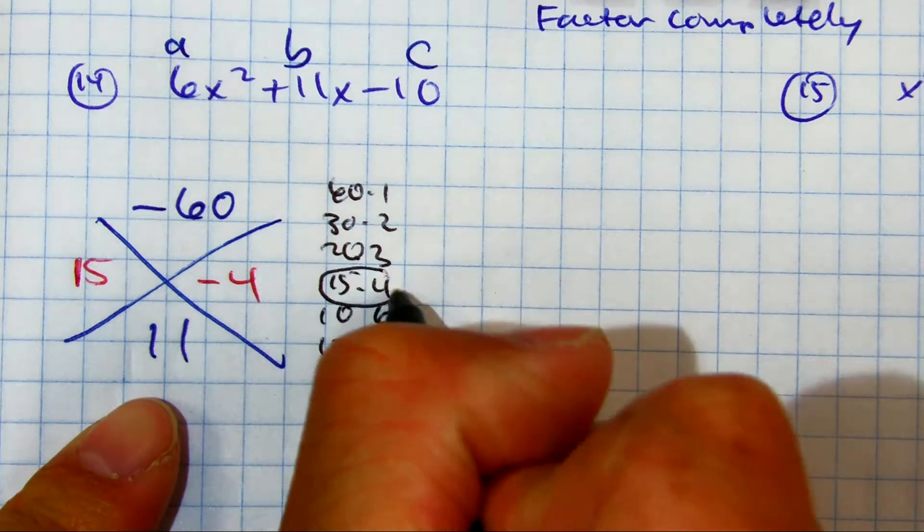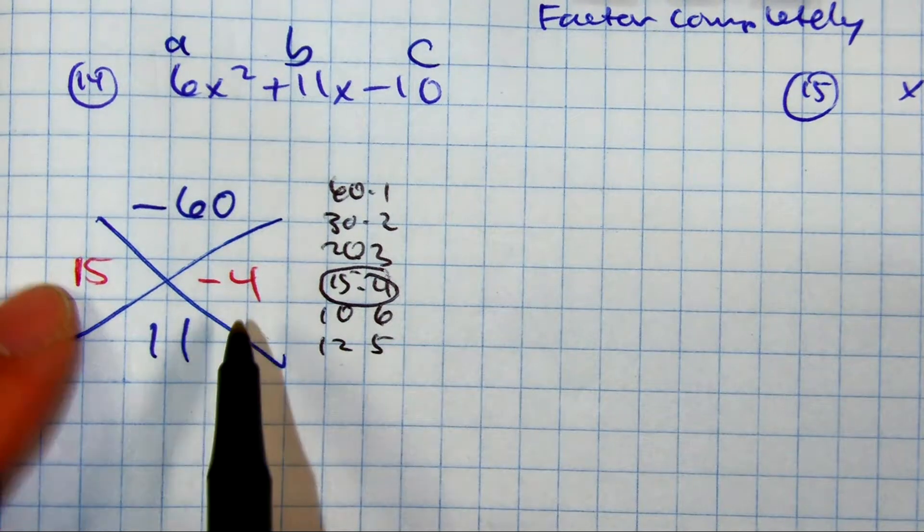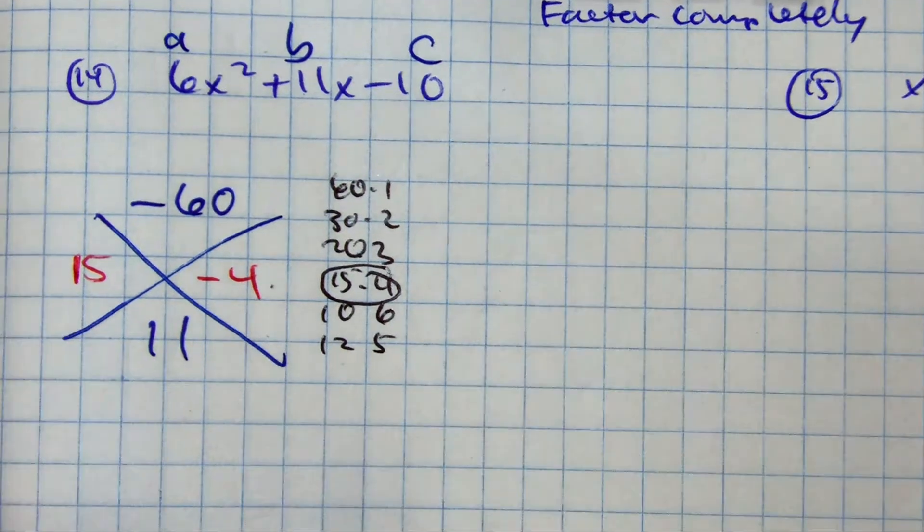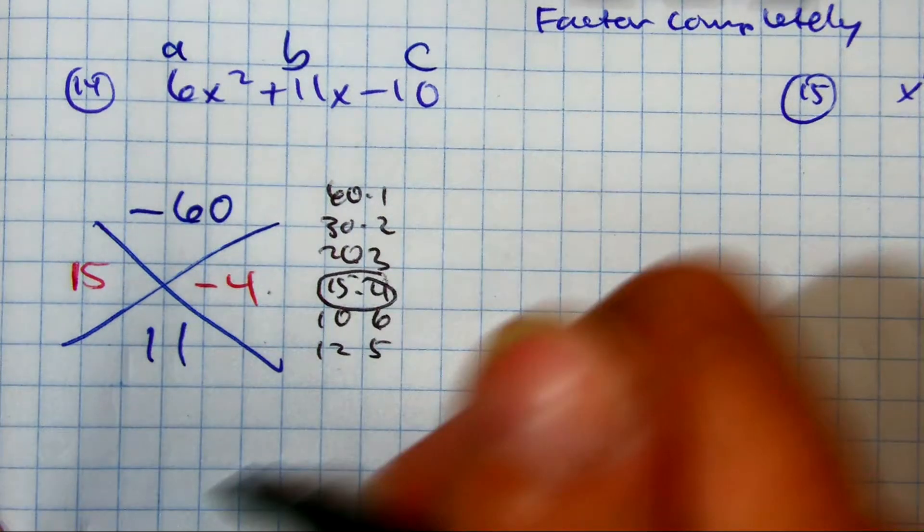And then you recognize that it's 15 and 4. 15 times negative 4 is negative 60. 15 plus negative 4 is 11. Good job, Kayla.